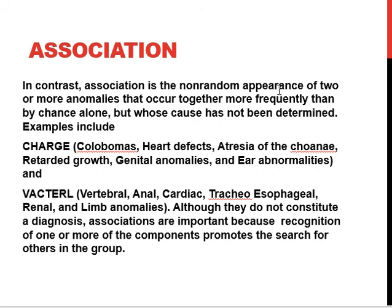An association is the non-random appearance of two or more anomalies that occur together more frequently than by chance alone, but whose cause has not been determined. Examples include CHARGE association (colobomas, heart defects, atresia of choanae, retarded growth, genital anomalies, ear abnormalities) and VACTERL association (vertebral, anal, cardiac, tracheoesophageal, renal, and limb anomalies). Although they do not constitute a diagnosis, associations are noted because recognizing one component prompts the search for others in the group.